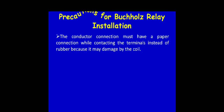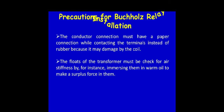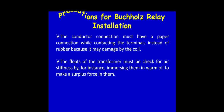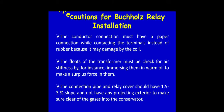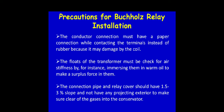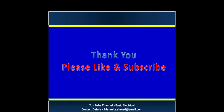Precautions for Buchholz relay installation: first, conductor connections must have a proper connection when connecting terminals, using appropriate materials instead of rubber as it may get damaged by the coil. Second, the floats of the transformer must be checked for air tightness by immersing them in warm oil. Third, the connection pipe and relay covers should have a 1.5 to 3 percent slope and should not have any projecting exterior, to ensure gases are cleared into the conservator.